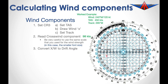We now need to convert this crosswind component to work out what sort of drift angle we would be applying in this situation. To do that, we are going to read on the outer scale where our crosswind component is of 98 knots, and on the inside we are going to read the drift angle. At 98 knots you can see it is in between 12 and 13 degrees, slightly closer to 13, so we will say that our drift angle is 13 degrees.